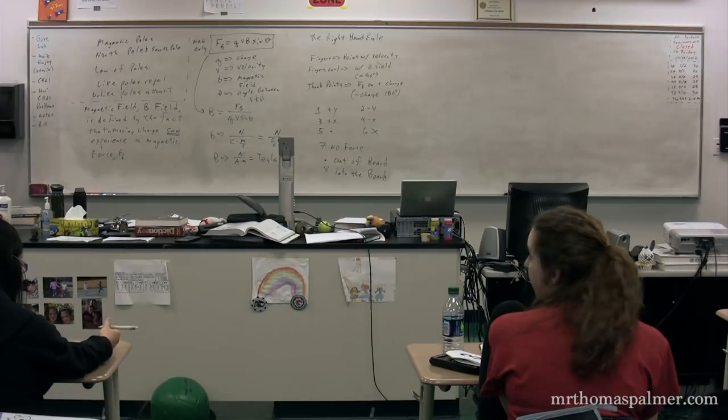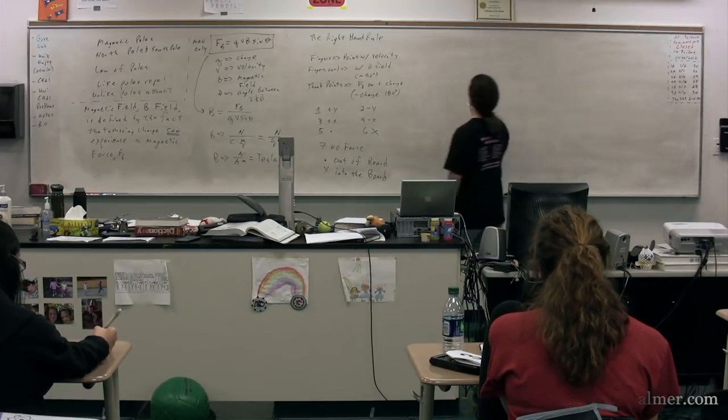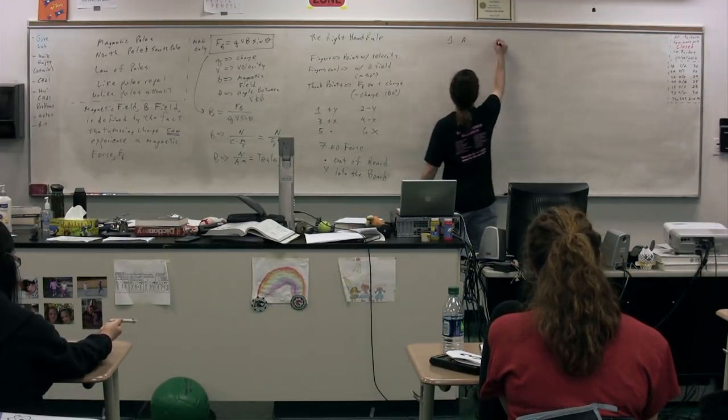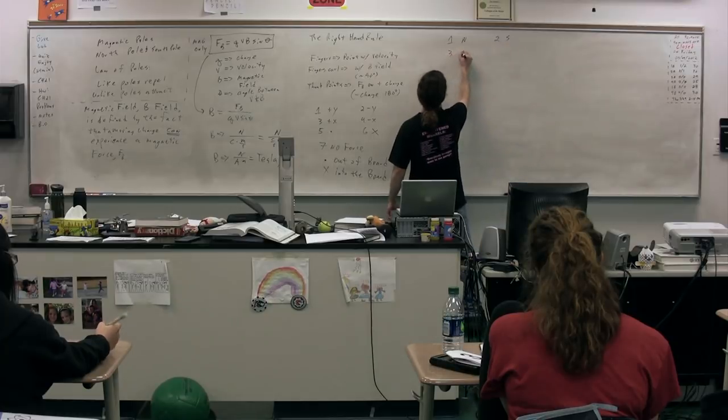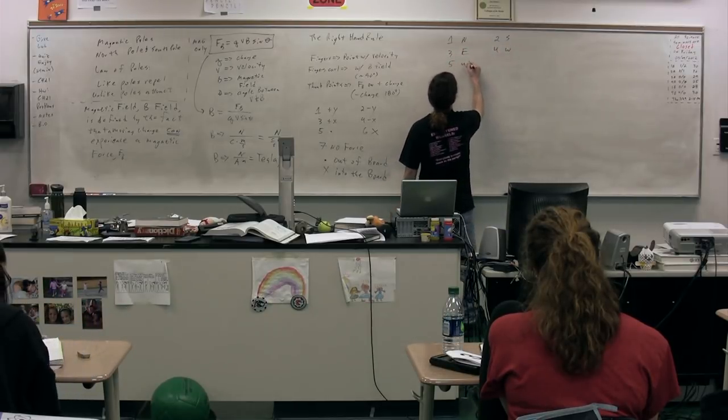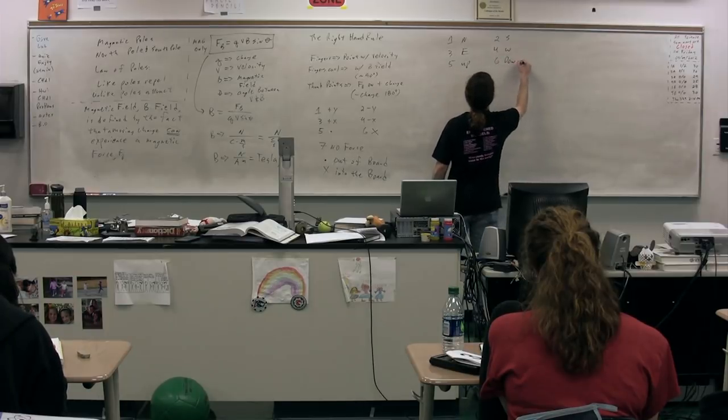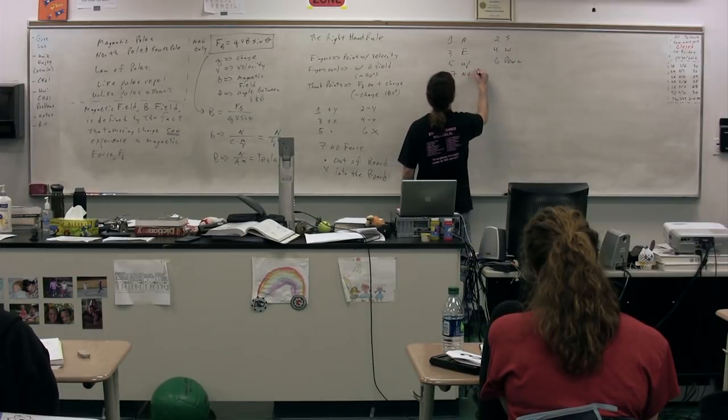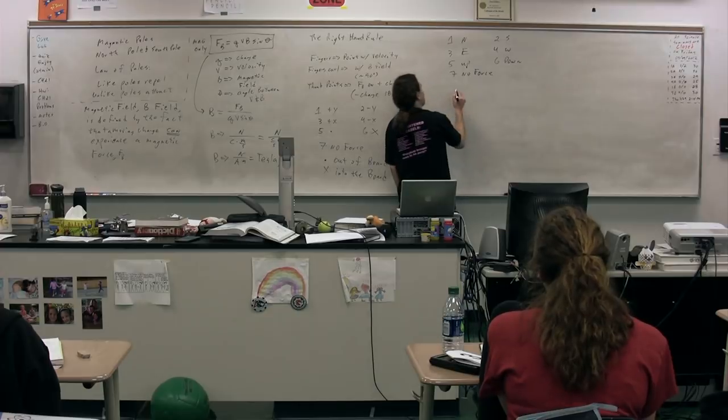So what we're going to do now is we're going to change the numbers slightly. 1 is north, 2 is south, 3 is east, 4 is west, 5 is up, 6 is down, and 7 is no force. We're going to have basically a table.